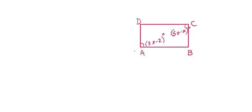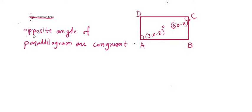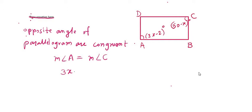We know that opposite angles of a parallelogram are congruent. Therefore, angle A equals angle C. So we write: measure of angle A equals measure of angle C. Angle A is 3X minus 2, and angle C is 50 minus X.